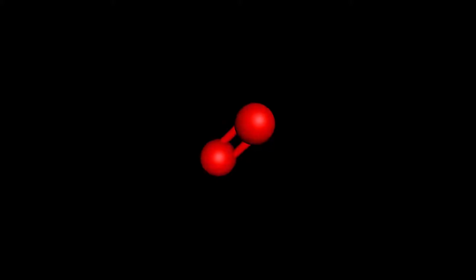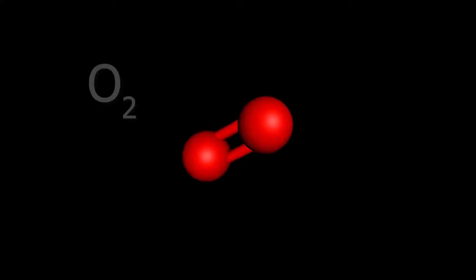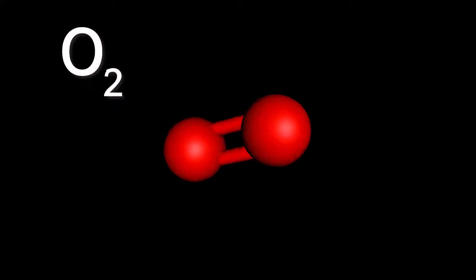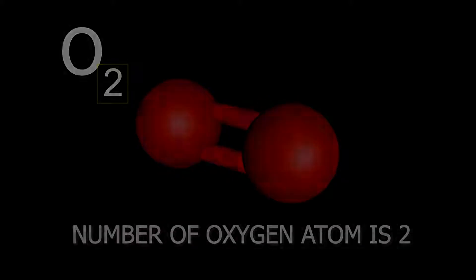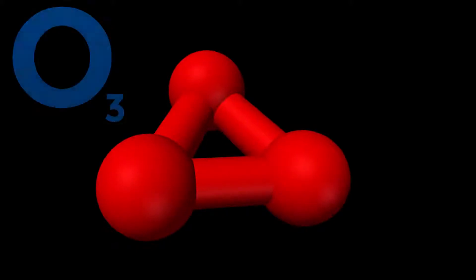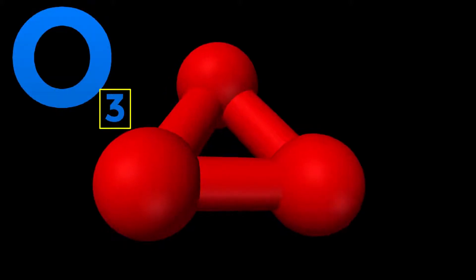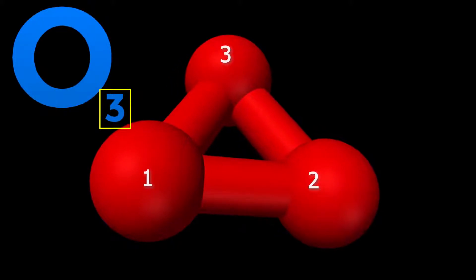For example, oxygen molecule is represented as O2. Here the number of oxygen atoms is 2. Ozone molecule is represented as O3. Here the number of oxygen atoms is 3.